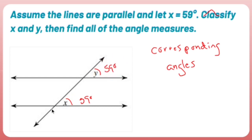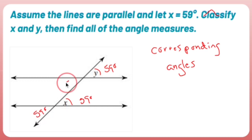Now x and this angle right here are vertical, which means that angle 2 is 59 degrees, and y and this angle right here are vertical, so that means they're 59 degrees. So that makes life a little easy to remember.